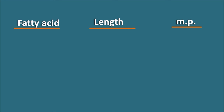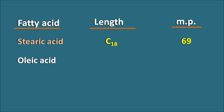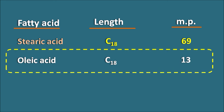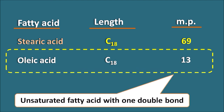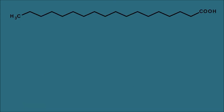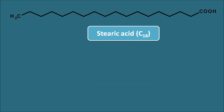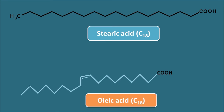Comparing stearic acid and oleic acid: stearic acid is a C18 saturated fatty acid with a melting point of 69°C, while oleic acid is a C18 unsaturated fatty acid with a melting point of 13°C. Oleic acid has one double bond at the ninth carbon position from the carboxylic acid end, which is responsible for the bend in the structure, leading to less molecular interaction, less Van der Waals forces, and therefore a lower melting point.